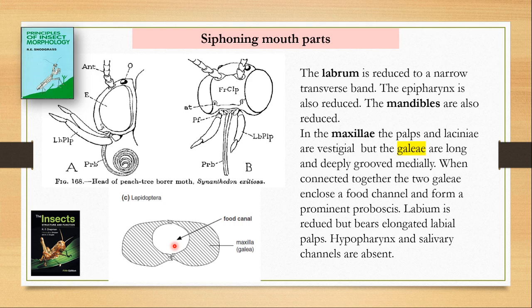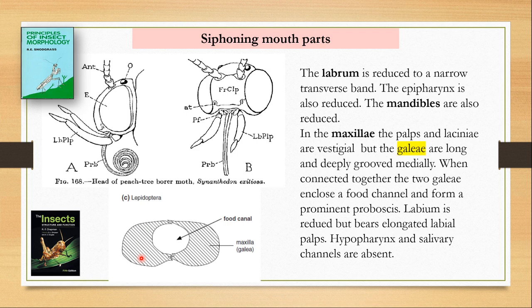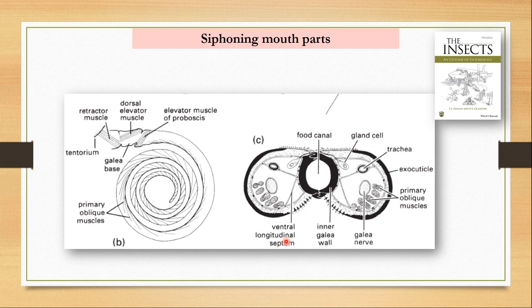The labium is reduced but bears elongated labial palps. The hypopharynx and salivary channels are also absent here, so the nectar is taken in as it is — it does not require digestion by the salivary gland and is already liquid. The two galeae from two sides join together to form this straw-like structure, which is coiled when not in use and extended forward to draw nectar from flowers. You can also see the trachea supplying oxygen to the galeae and the cuticular structures that make them up.